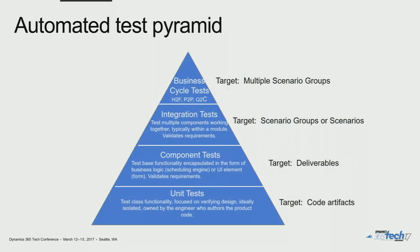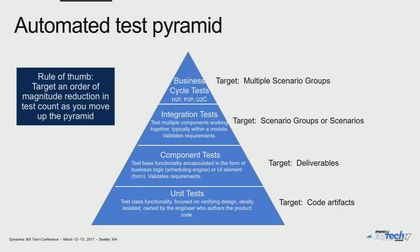The last principle to discuss is the automated test pyramid. Hopefully a lot of you have seen some variation of this. The foundation is unit tests — really a design-focused activity — then you have component tests, integration tests, and business cycle tests. A rule of thumb is if you have an order-of-magnitude difference between these different levels, you're probably in the right place: a thousand unit tests, maybe 100 component tests, maybe 10 integration tests, and maybe a single business cycle test.